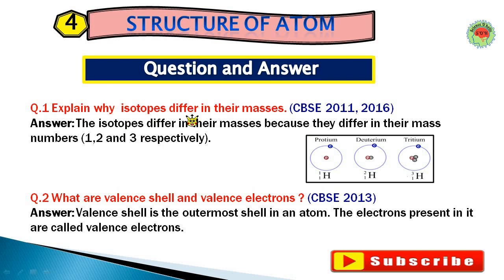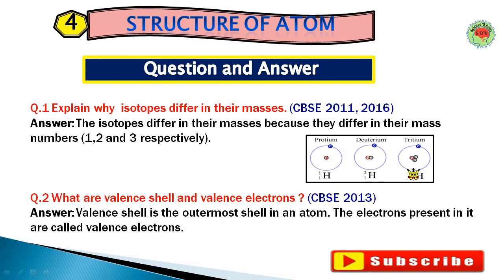Question number one: Explain why isotopes differ in their masses. Isotopes are atoms having the same atomic number but different mass numbers. So isotopes differ in their masses because they differ in their mass number. For example, the isotopes of hydrogen are protium, deuterium, and tritium, with mass numbers 1, 2, and 3 respectively, and atomic number 1 for all three. Because their mass numbers are different, they differ in their masses.